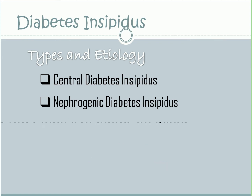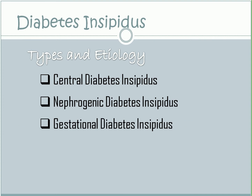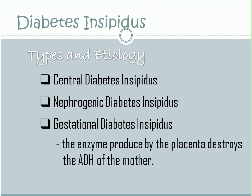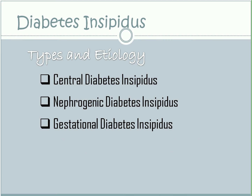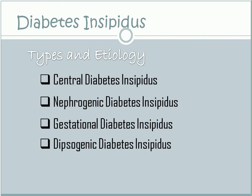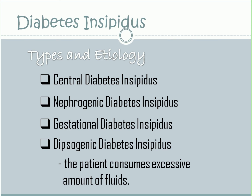Next is gestational diabetes insipidus. It is a rare condition and it can only occur during pregnancy. The enzyme produced by the placenta attacks and destroys the antidiuretic hormone of the mother. Lastly, dipsogenic diabetes insipidus — this is when the patient consumes an excessive amount of fluids. It can be caused by damage to the thirst-circulating mechanism in the hypothalamus.